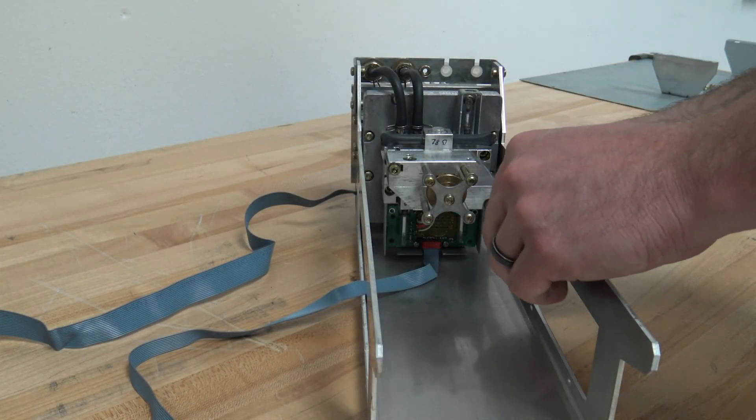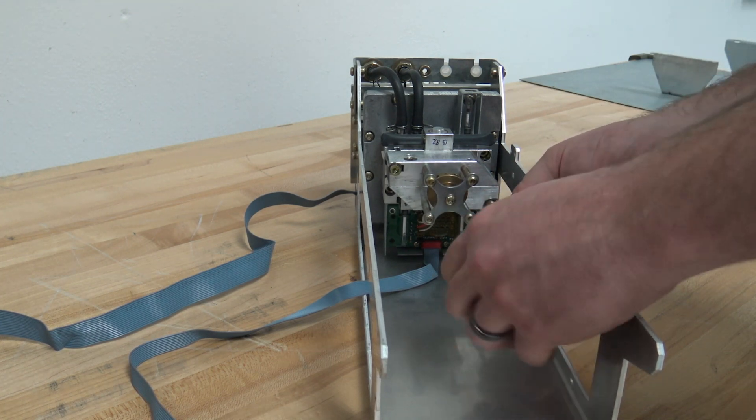To begin, remove the optical coupler by loosening and removing the two screws holding it in place.